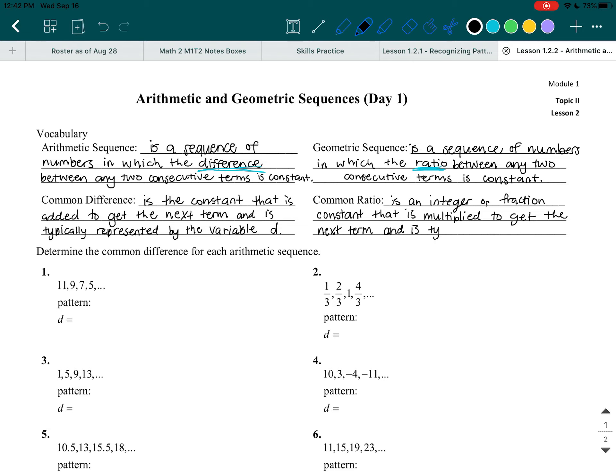The common ratio is an integer or fraction constant that is multiplied to get the next term, and is typically represented by the letter R, by the variable R.